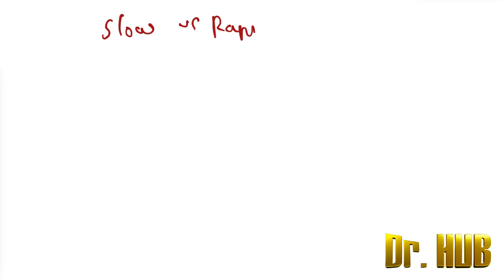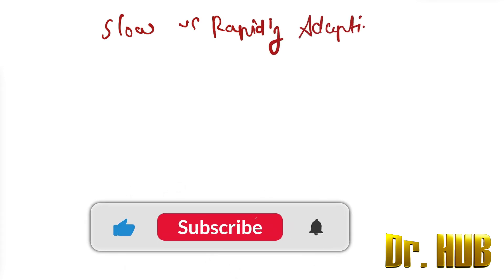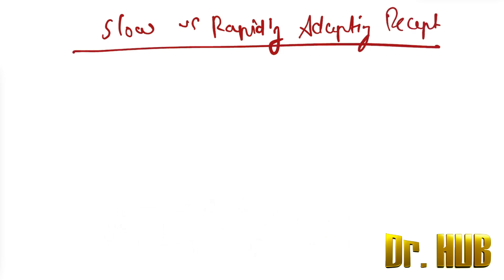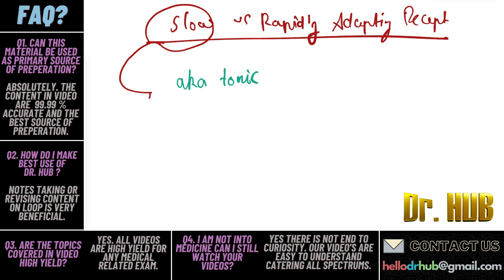Hey guys, this is Dr. Hub. Today we look at comparing the slow versus the rapidly adapting receptors. First, we look at slow — they are also known as tonic receptors. They are expanded on the free nerve endings.